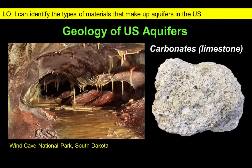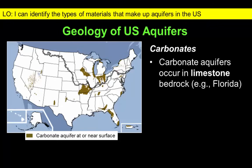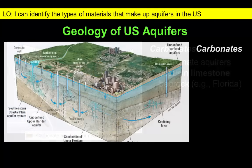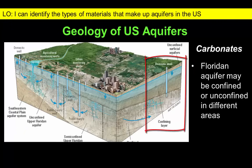Limestone can be dissolved away, leaving large spaces to fill with groundwater. Aquifers composed of limestone are not as common as some others, but can be found in states like Missouri, Ohio, and Florida. Groundwater may enter the carbonate aquifer system in Florida in its unconfined state, where it is buried at shallow depths, and then may flow downslope through connected fractures in cave systems to where it forms a confined aquifer further south.